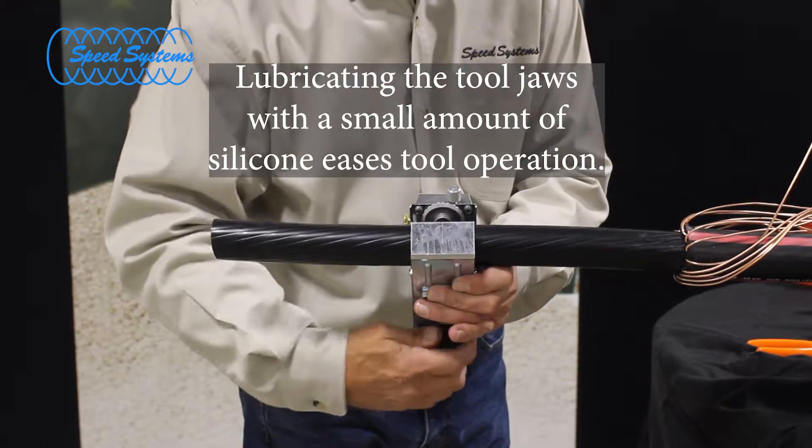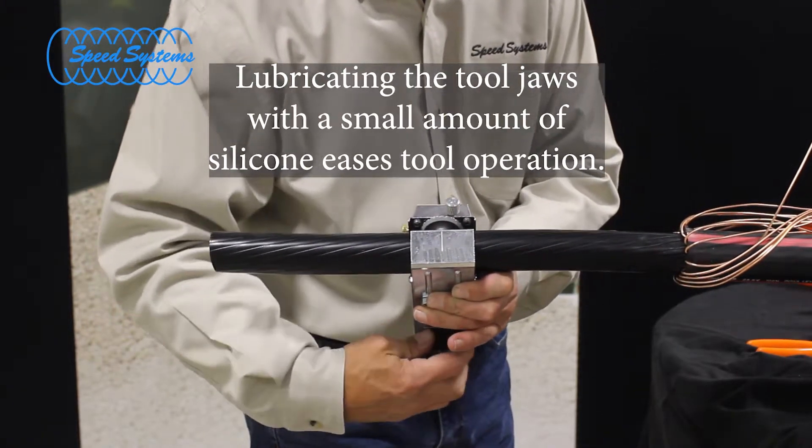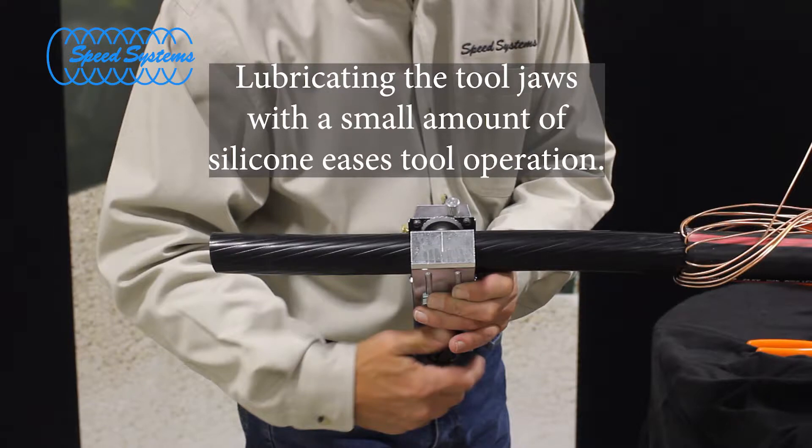Place the 1800SS on the cable at the point you marked and close the jaws until the tension is released on the knob. Make sure the cable is as straight as possible.